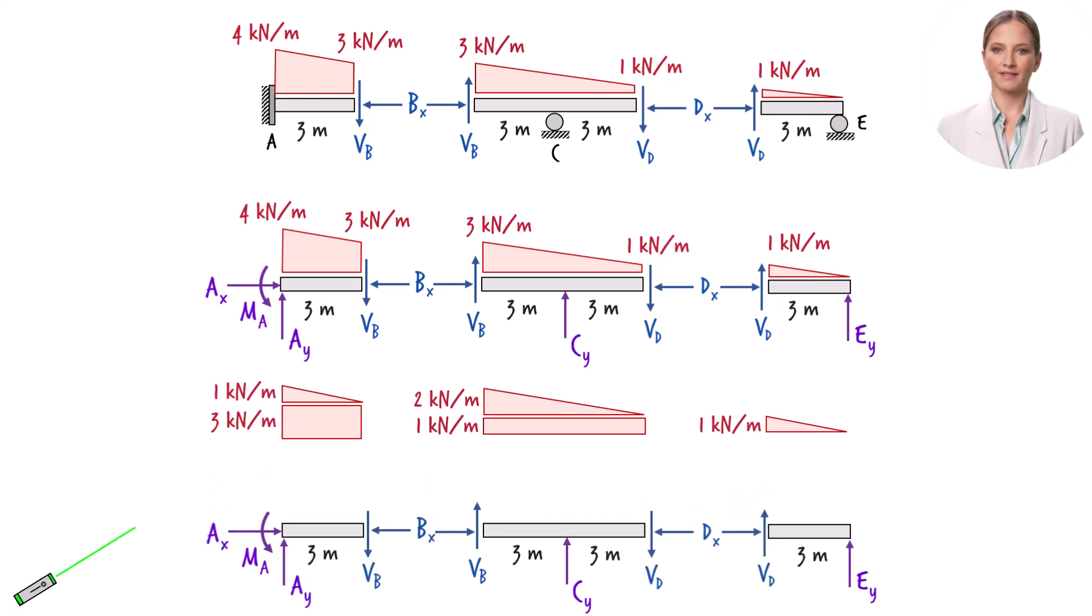We can replace this rectangular load with a concentrated load of 9 kN, which represents the area of the rectangle. This load is positioned at the rectangle's center, which aligns with the midpoint of the beam segment.